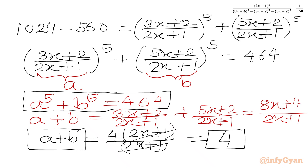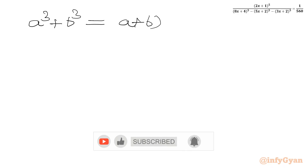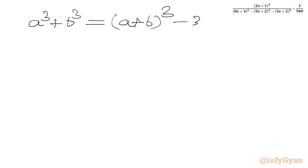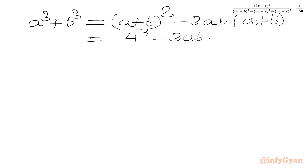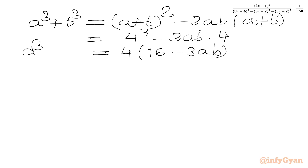Now I will use an algebraic formula to find A³ + B³. We know that A³ + B³ = (A+B)³ minus 3AB(A+B). Since A+B = 4, I write 4³ minus 3·AB·4. Taking 4 common, we get 4(16 minus 3AB). So A³ + B³ = 4(16 − 3AB), which is also now known in terms of AB.